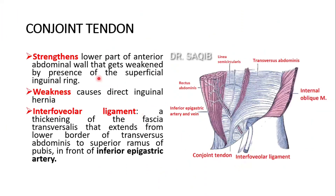This is very important: the conjoint tendon strengthens the lower part of the anterior abdominal wall that gets weakened by the presence of the superficial inguinal ring. Its weakness causes direct inguinal hernia.